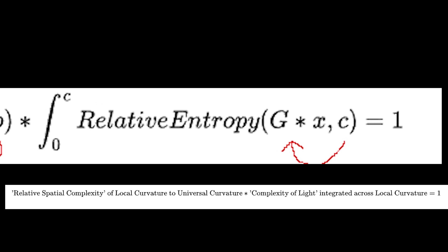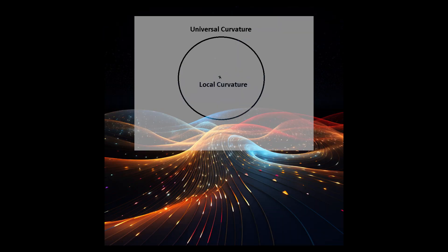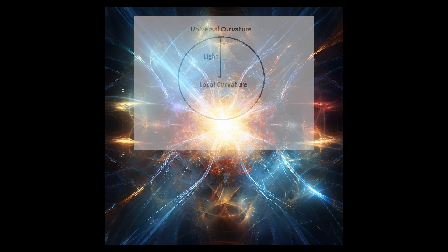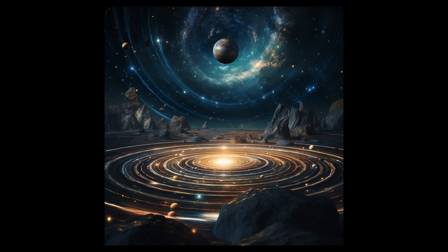This equation, then, is describing a conservation of information relationship that balances the flow between global and local quantum complexity curvature with the presentation of light across that local curvature. Thus, this quantum curvature of space would act as a field determining the quantum action of light.